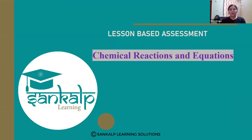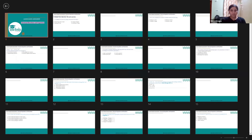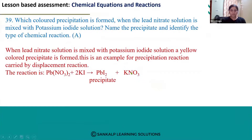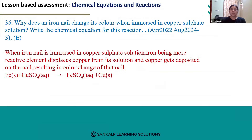Hello everyone. We have completed 35 questions. Let's see the 36th question. The 36th question says: why does an iron nail change its color when immersed in copper sulfate solution? Write the chemical equation for this.